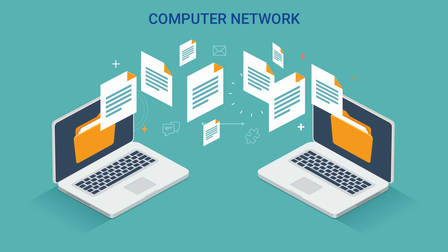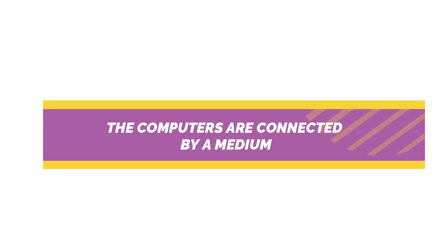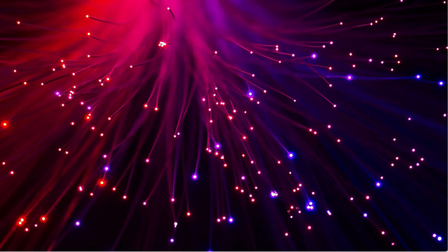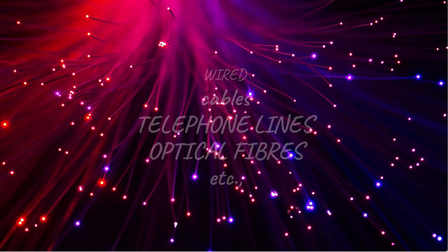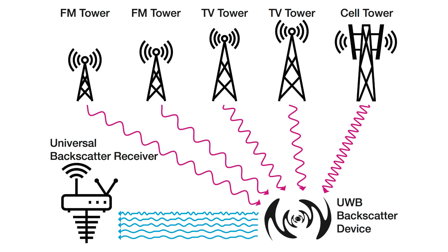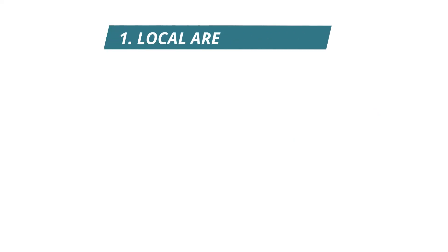In general, computers are connected by a medium, whether they are wired or wireless. Wired connections include cables, telephone lines, and optical fibers. Wireless connections use radio waves, infrared beams, and satellites. Each device in a network is called a node.